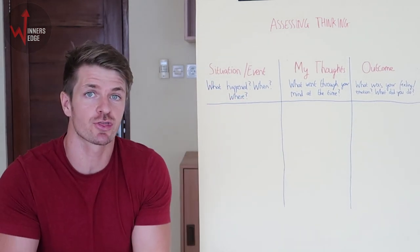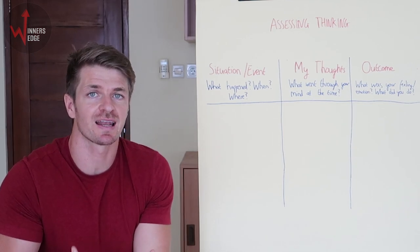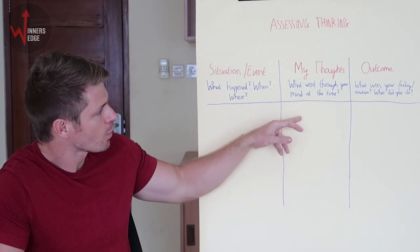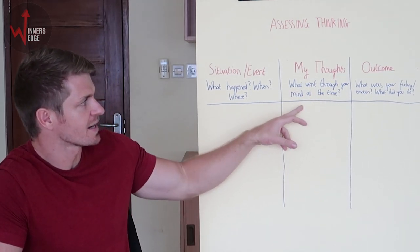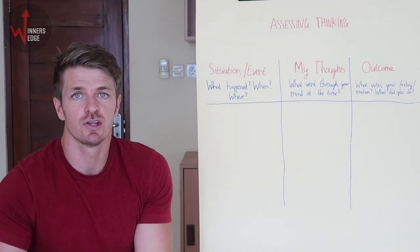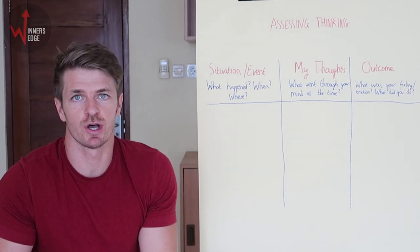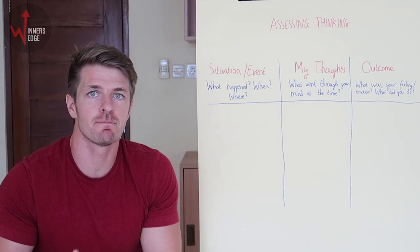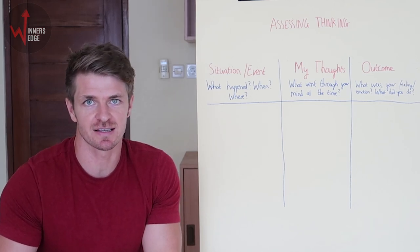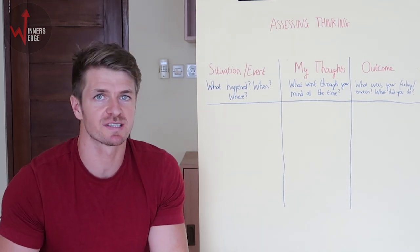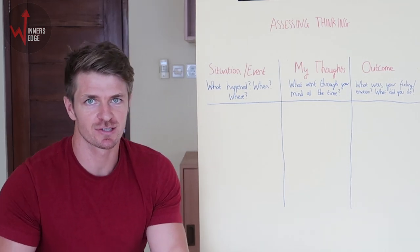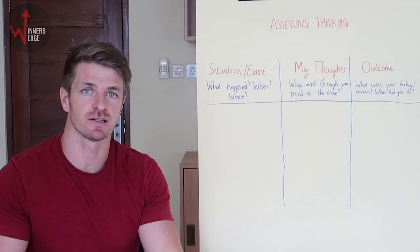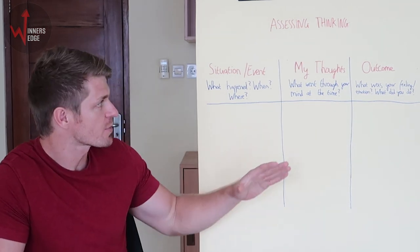Next step: what were your thoughts that led to that feeling? What went through your head at the time? You might be thinking things like: nothing I'm doing is working; why am I losing to such bad opponents; I'm better than these guys, why do I have to lose; I always get unlucky. These are some of the thoughts this player had that led them to tilt. So we've identified the thoughts.